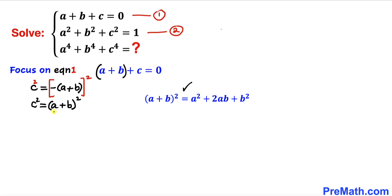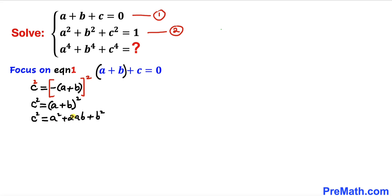So this equation becomes c squared equals a squared plus 2ab plus b squared. Now I'm going to isolate a squared plus b squared by moving 2ab to the other side, giving us a squared plus b squared equals c squared minus 2ab.